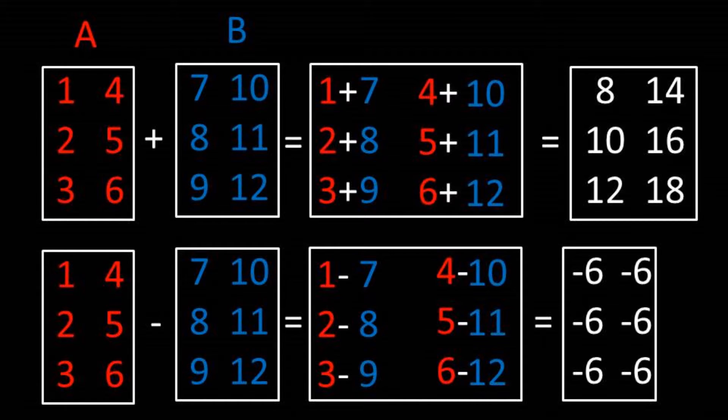Then for the subtraction portion, we have 1 minus 7 equals negative 6. After following the same process for all the other positions in the matrices, we get the following answers.